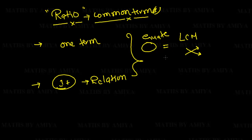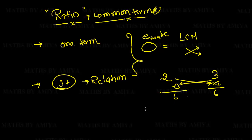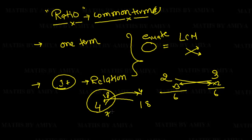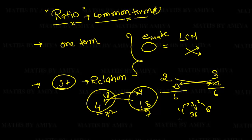What do we mean by LCM or cross multiplying? If we have 2 and 3 and we want to equate, we just cross multiply: 3 here and 2 here, so both become 6. If we have to equate 4 and 18, we cross multiply to get 72 and 72, or we take the LCM of 4 and 18, which is 36, and multiply accordingly. So either cross multiply or take LCM of both and equate to that LCM.